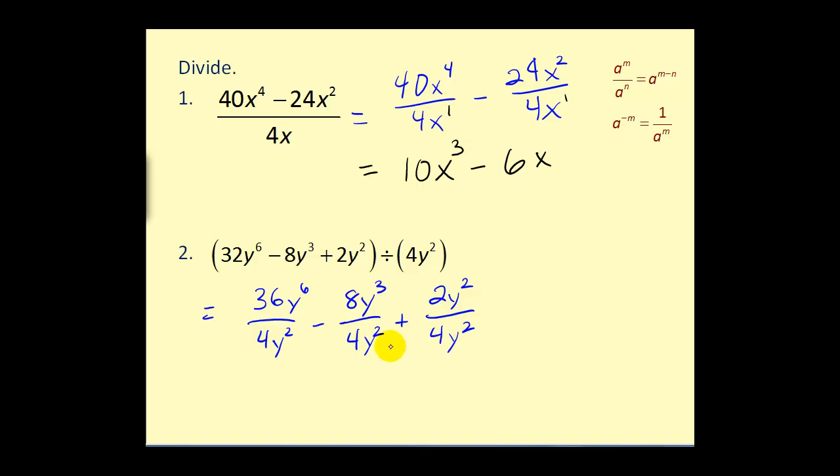So now we just simplify each fraction individually to obtain our quotient. Thirty-six divided by four, that would give us nine. y to the sixth divided by y to the second, y to the fourth, minus eight divided by four, two y to the third divided by y to the second, three minus two, give us y to the first, plus, now here we have a fraction, two-fourths is equal to one-half, and y squared over y squared, that would equal one, so here's our quotient.